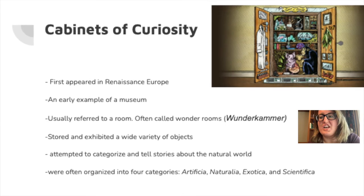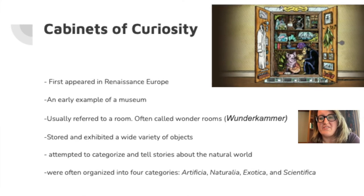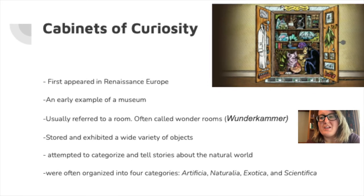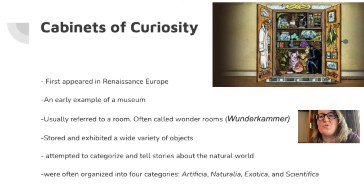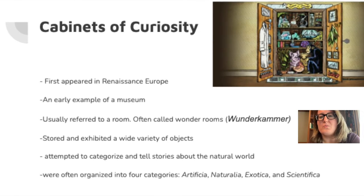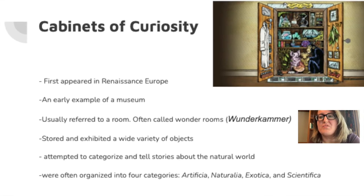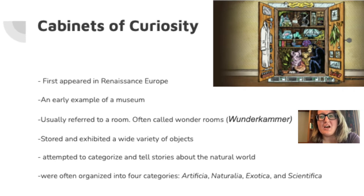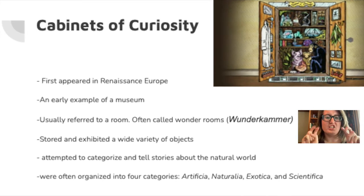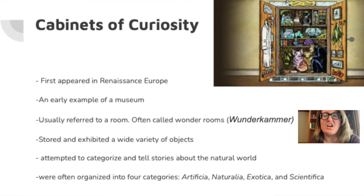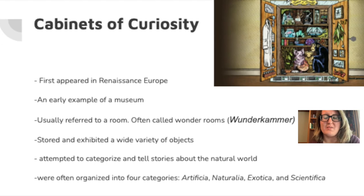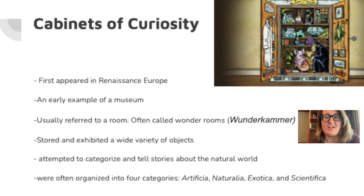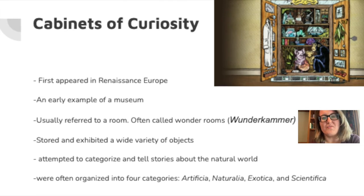The four categories are: artificia, naturalia, exotica, and scientifica. Artificia refers to man-made objects, showcasing skills in applied and fine art. Scientifica encompasses instruments for the understanding and quantification of the world, such as compasses and globes. Exotica covers curious objects from foreign lands — and I'll note that the word exotic can be very focused on what could be familiar to one person but different to another, so perspective and biases in museums is something we'll think about. And naturalia focuses on the marvels of nature.